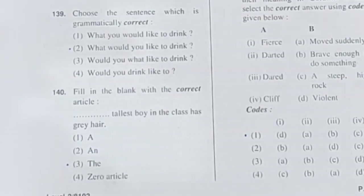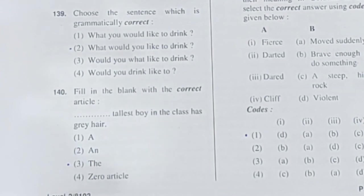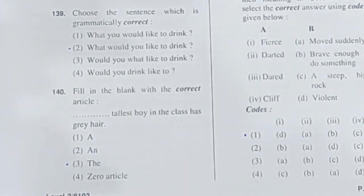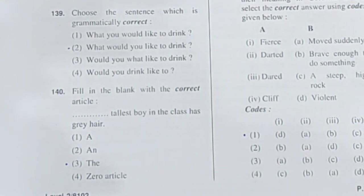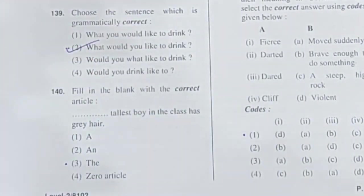Question 139: Choose the sentence which is grammatically correct. Options: 1. What you would like to drink, 2. What would you like to drink, 3. Would you what like to drink, 4. Would you drink like to. The correct structure is: question word (what) + helping verb (would) + subject (you) + like + to drink. So 'What would you like to drink?' — option 2 is correct.